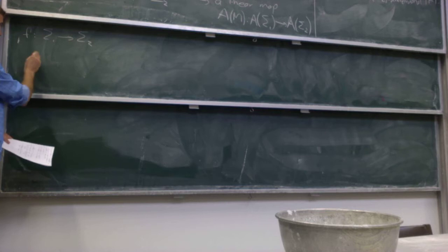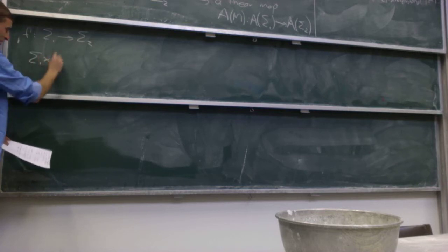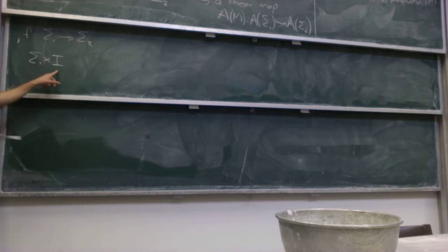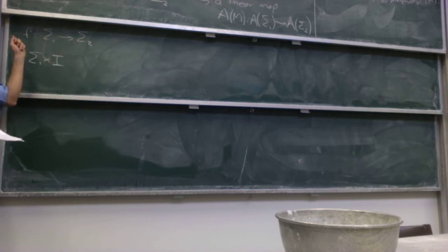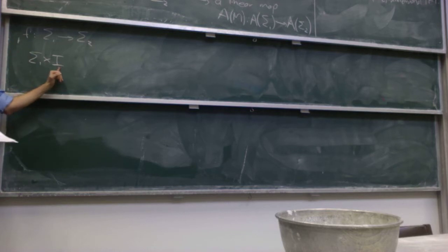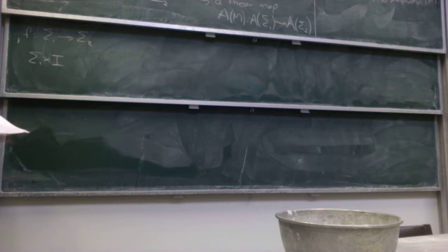Say I've got some diffeomorphism f from sigma_1 to sigma_2. I just want to take sigma_1 cross I, use the bottom boundary of this identically to sigma_1, and put the top boundary identified by f. So there are two pieces of boundary of that product.